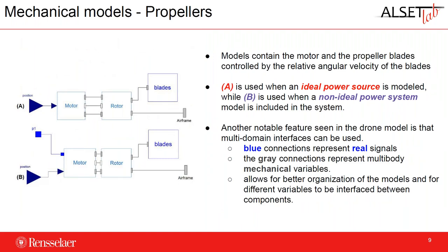Next we have our mechanical models. We have two different kinds of propeller models: model A uses an ideal power source and model B uses a non-ideal power source. Each motor consists of a motor, a rotor, and a blade block. The dark blue connections carry real signals from the controller determined by the PID block outputs. In model B, the other blue line represents the electrical connection from the battery determining how much voltage we supply to each motor. The light gray connections are mechanical variables representing the multibody connections between components. This setup allows better organization and easier switching between levels of complexity without building new models each time.